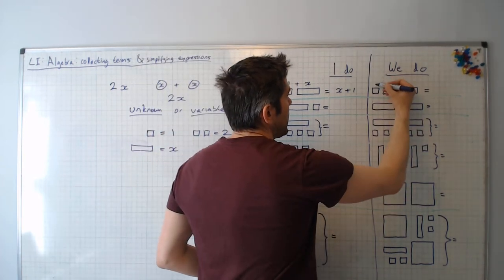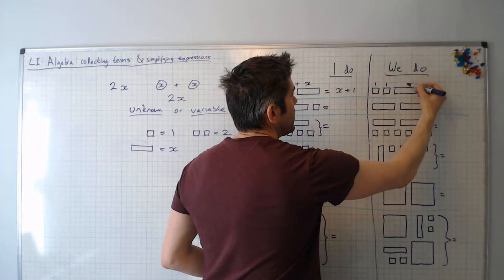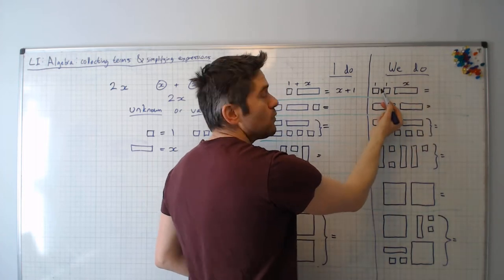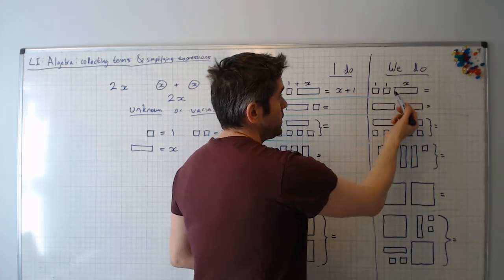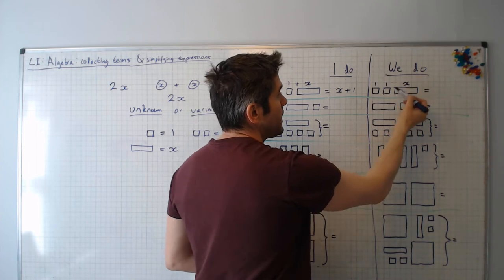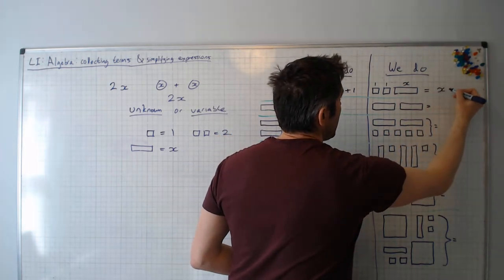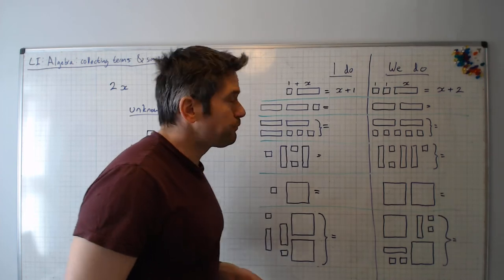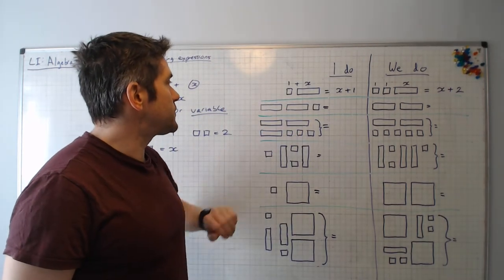Pause the video and have a go at this one. So in this case we have 1 plus another 1 plus x. We know that 1 plus 1 makes 2, so we have 2 plus x. Again we write the x first so we're going to write x plus 2.